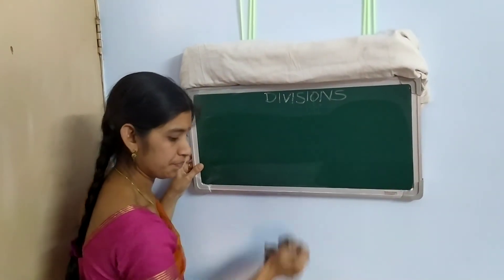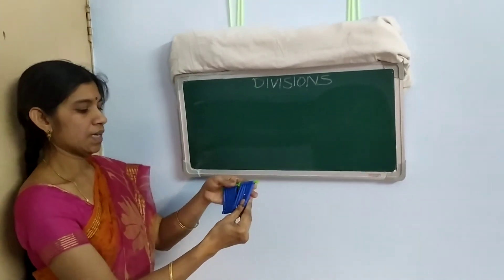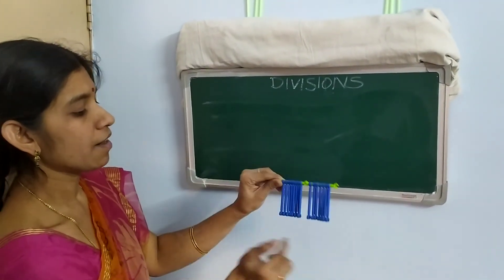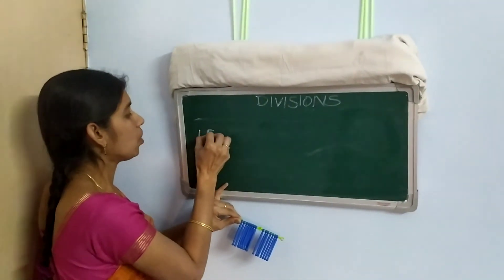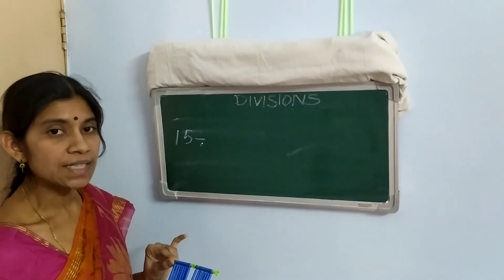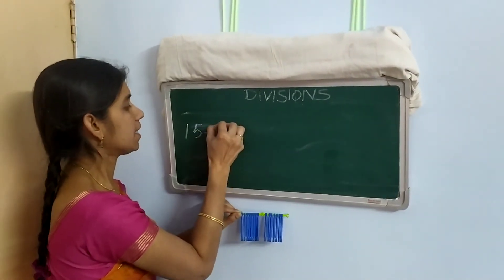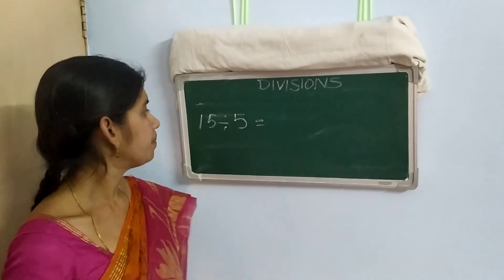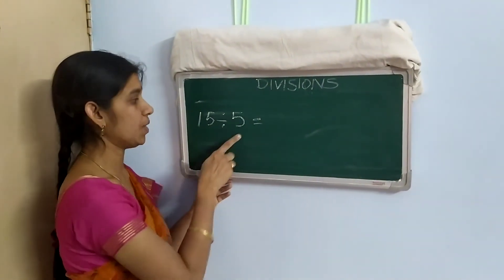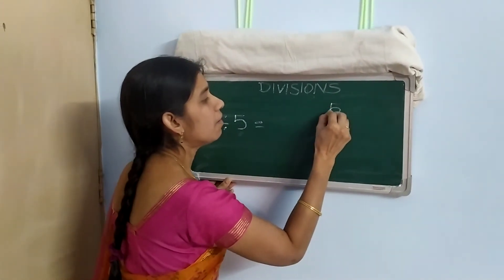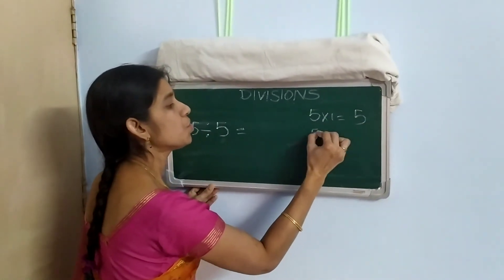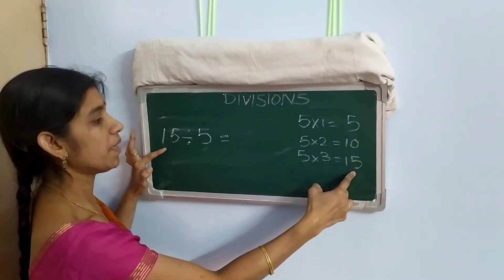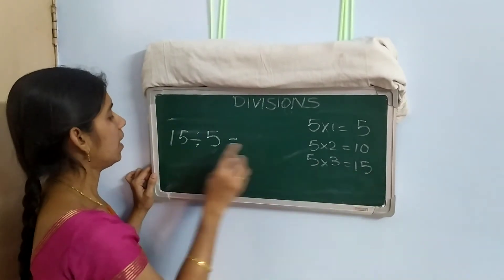We will see one more example. There are 15 strings here: 1, 2, 3, 4, 5, 6, 7, 8, 9, 10, 11, 12, 13, 14, 15. I want to make them into groups of 5. How many groups will I form? I don't know how many groups to form, but 5 in a group should be there. What I should do is read the 5 times table: 5×1=5, 5×2=10, 5×3=15. Yes — this 15 is the total to be divided. So 5 threes are 15 — this total 15 is divided by 5.